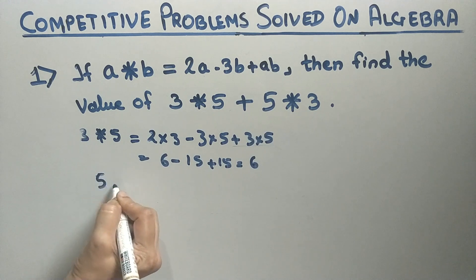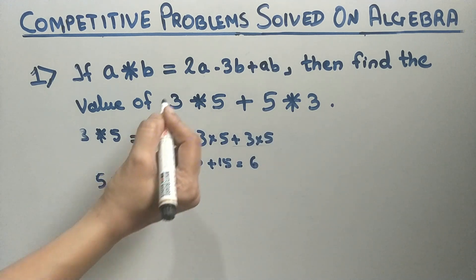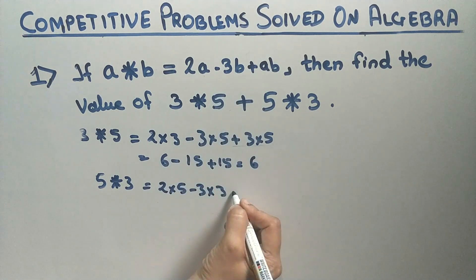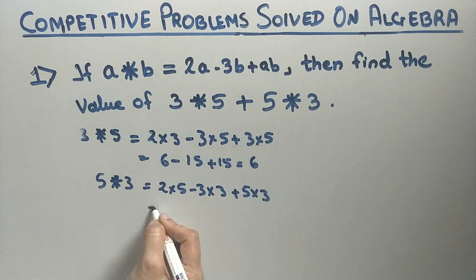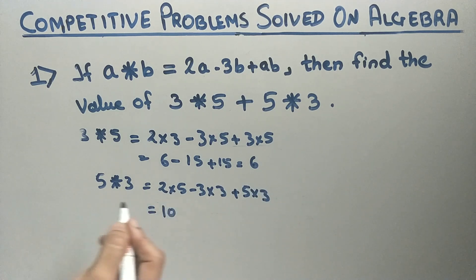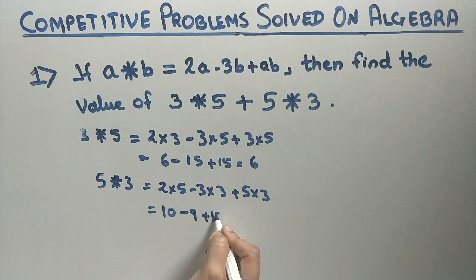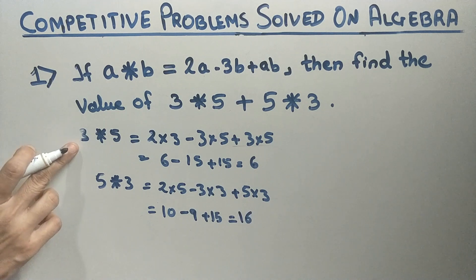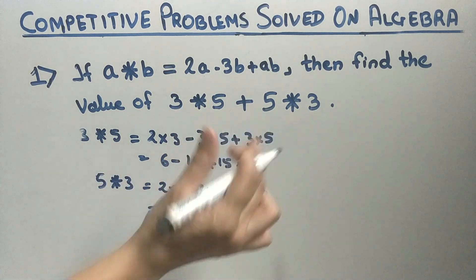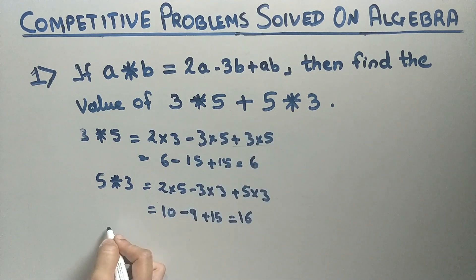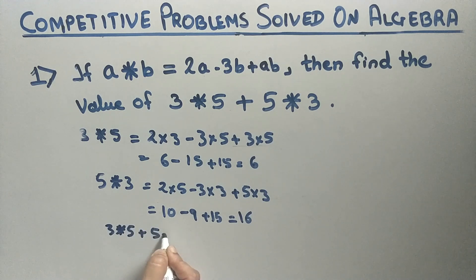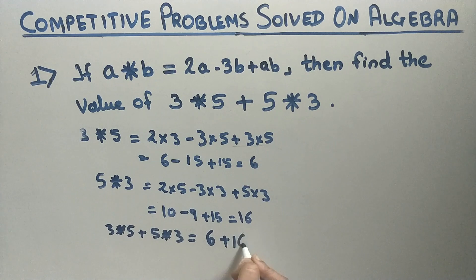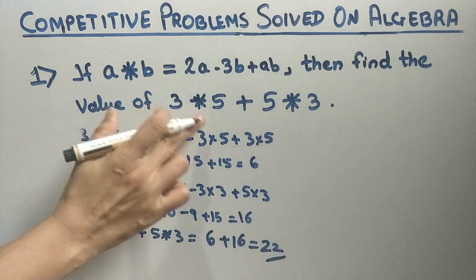Now we find 5⊙3: here a = 5 and b = 3, so 2×5 - 3×3 + 5×3 = 10 - 9 + 15 = 16. Now substituting back: 3⊙5 + 5⊙3 = 6 + 16 = 22. So the answer is 22.